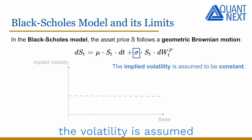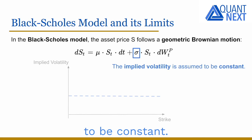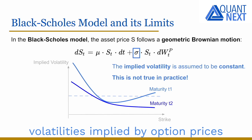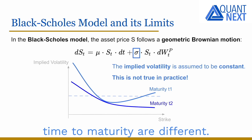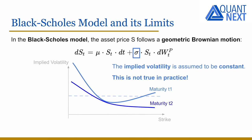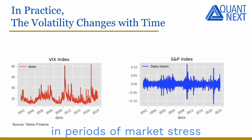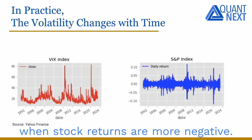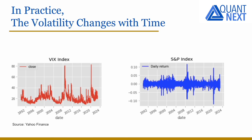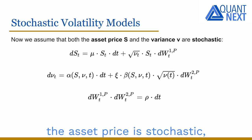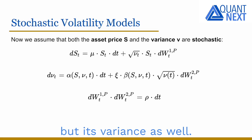In the Black-Scholes model, the volatility is assumed to be constant. But this is not true in practice: volatilities implied by option prices with different strikes or time to maturity are different. In practice, the volatility changes with time and we tend to observe higher volatilities in periods of market stress when stock returns are more negative. So all of this motivates us to assume that not only the asset price is stochastic but its variance as well.